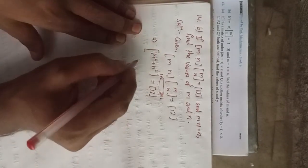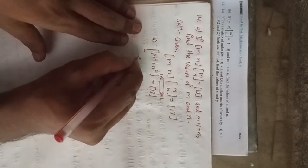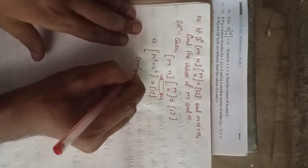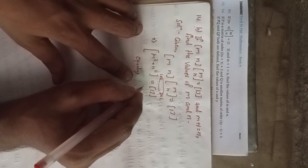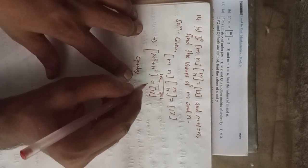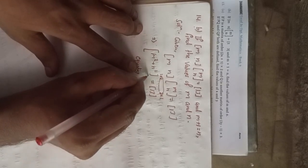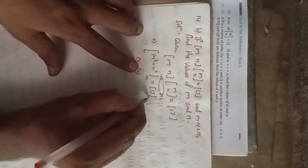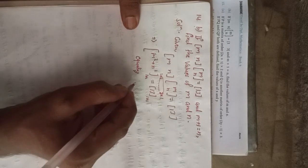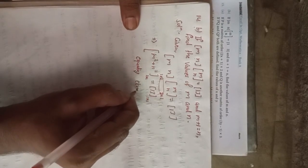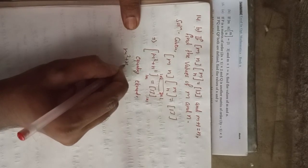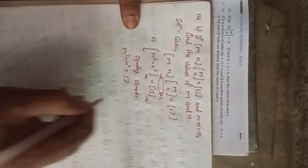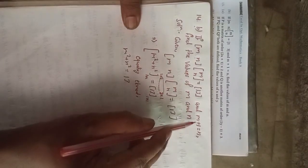We have to equate this. Equating: since this is a single element, it is a 1×1 matrix and the right side is also a 1×1 matrix. Now equating the elements, we get: m² + n² = 13.